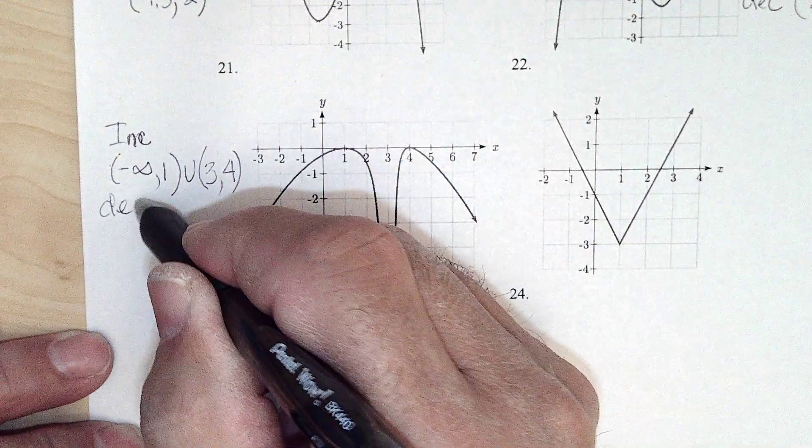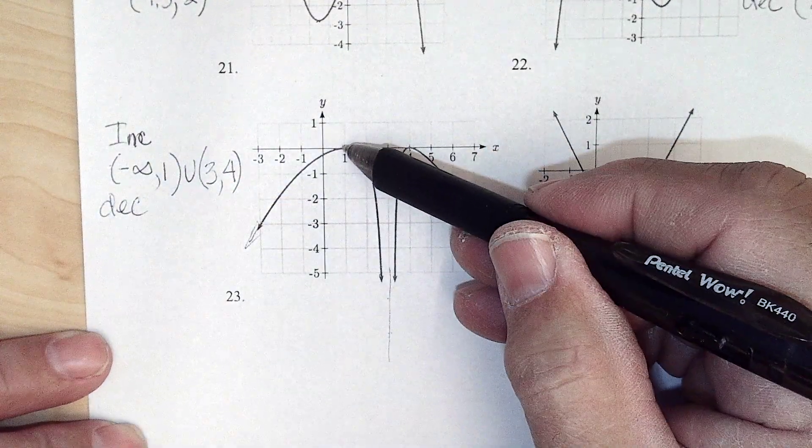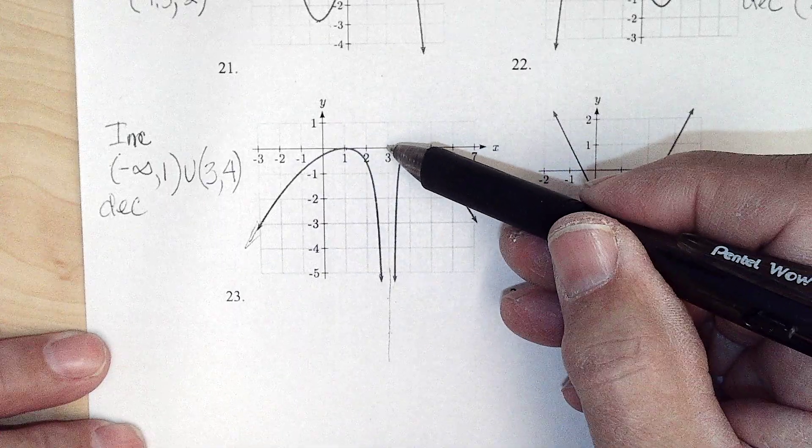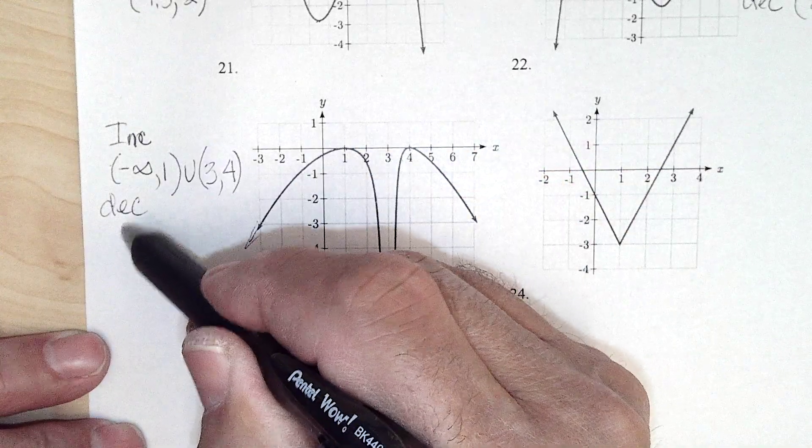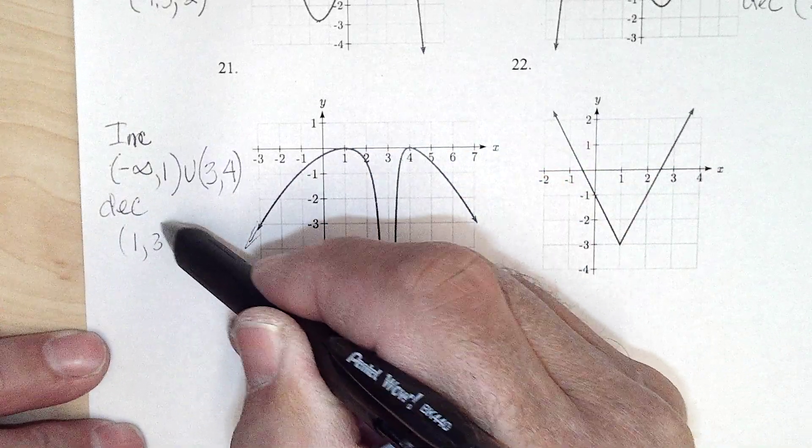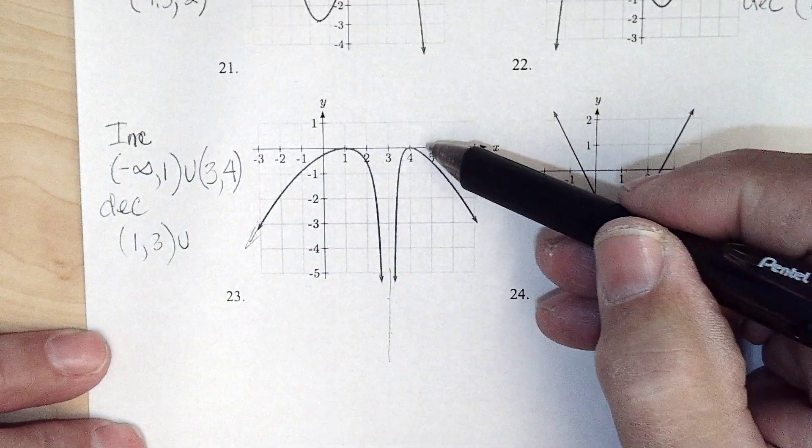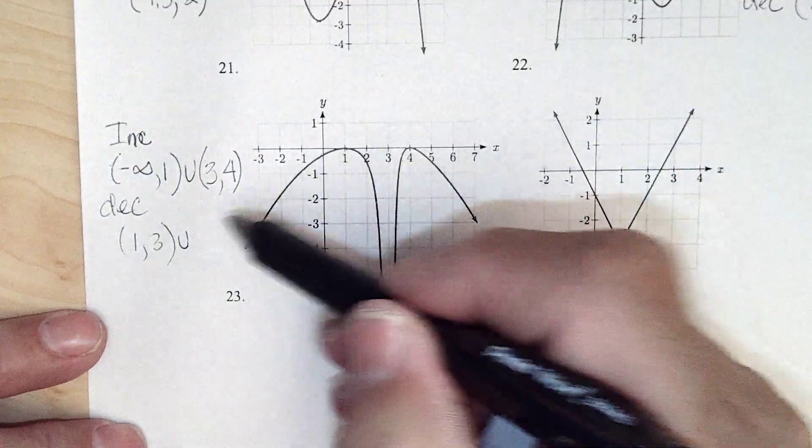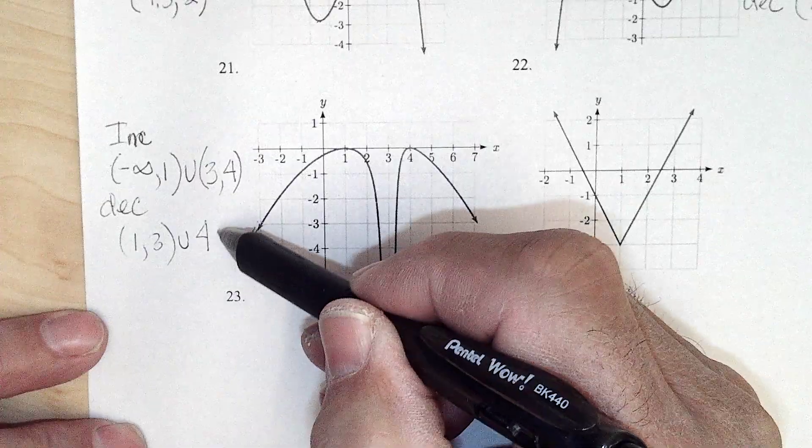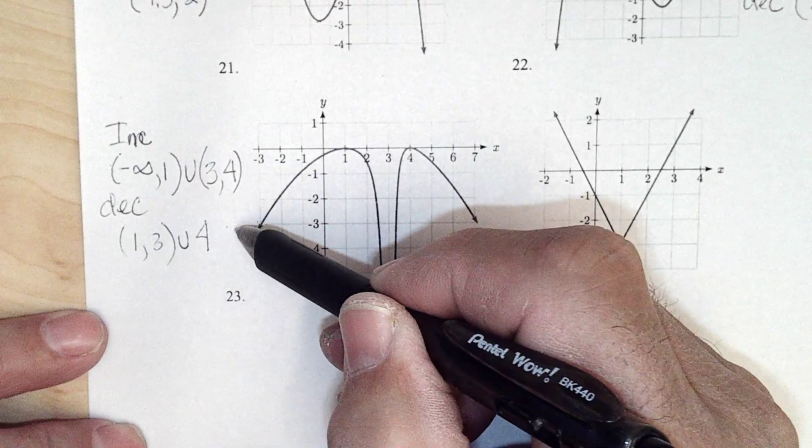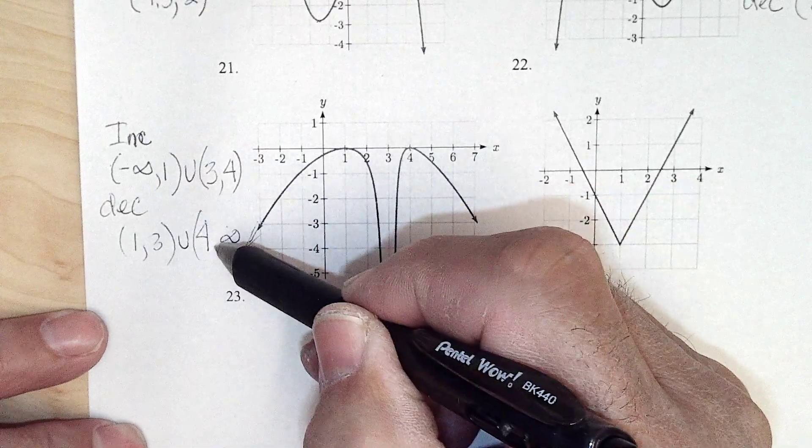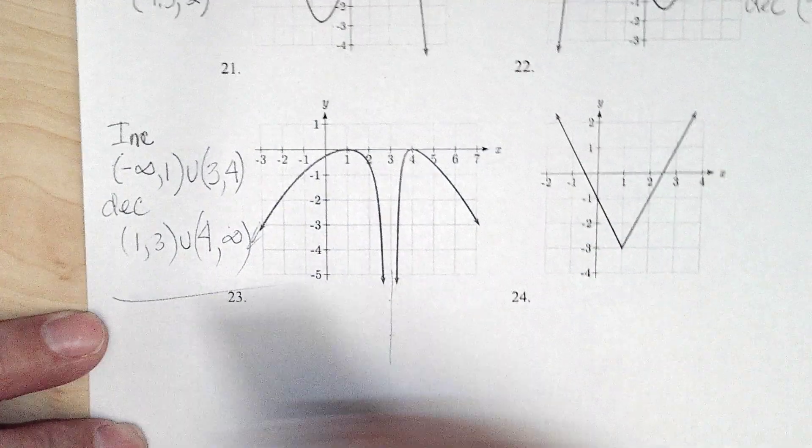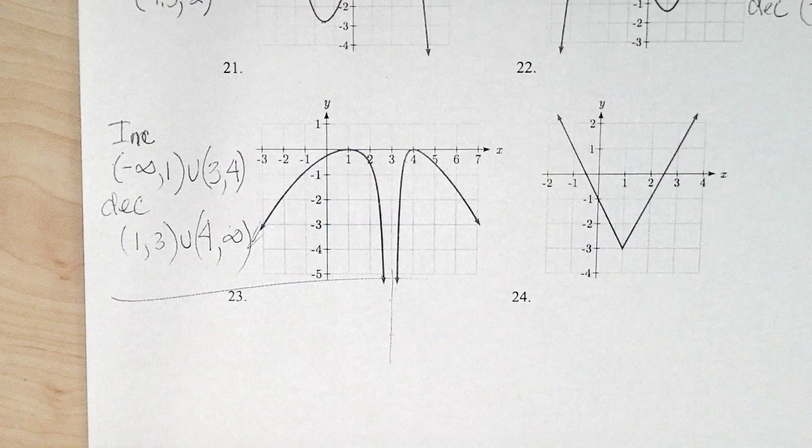And decreasing, it looks like it decreases from 1 to 3, and it decreases from 4 to infinity. And that's what I put for the answers on that one.